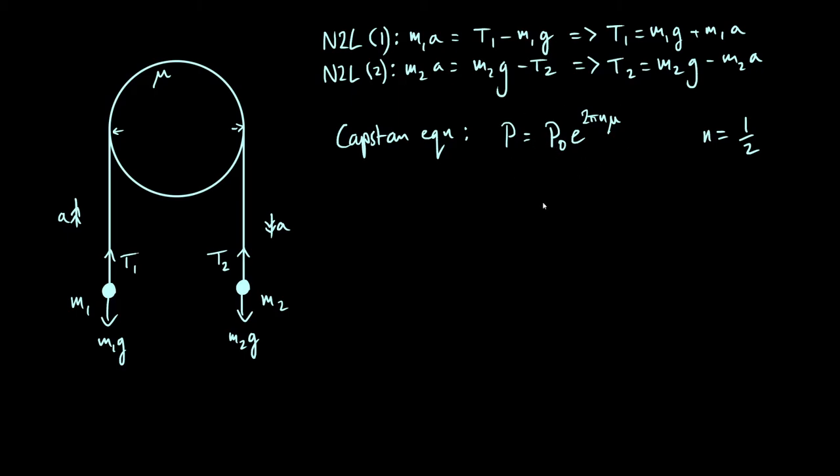So if we apply this general equation to our specific case here, what we are going to find is that t2 is equal to t1 times e to the pi mu, just plugging in n is a half, and think about the specific forces that we have here. So there we go, we know t2 is the one that has to be bigger than t1 in the case when the mass m2 is accelerating downwards, because then the rope is moving around like this.